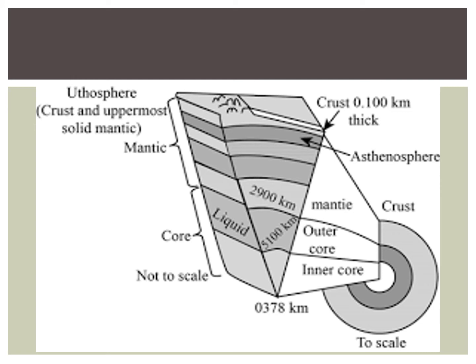Another diagram shows the measurements of the surface, the middle layer, and the lower layer of the earth. You can see that the crust and uppermost solid mantle is there, which is actually 0.1 km thick. Then comes the mantle core, after which is an area that is not to scale — we cannot actually measure that. On the right side you can see the asthenosphere, which comes after the lithosphere.